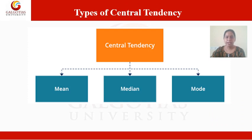There are various types of central tendency. The first type is the mean, the second type is the median, and the third category is the mode. We'll discuss each type of central tendency one by one along with examples.